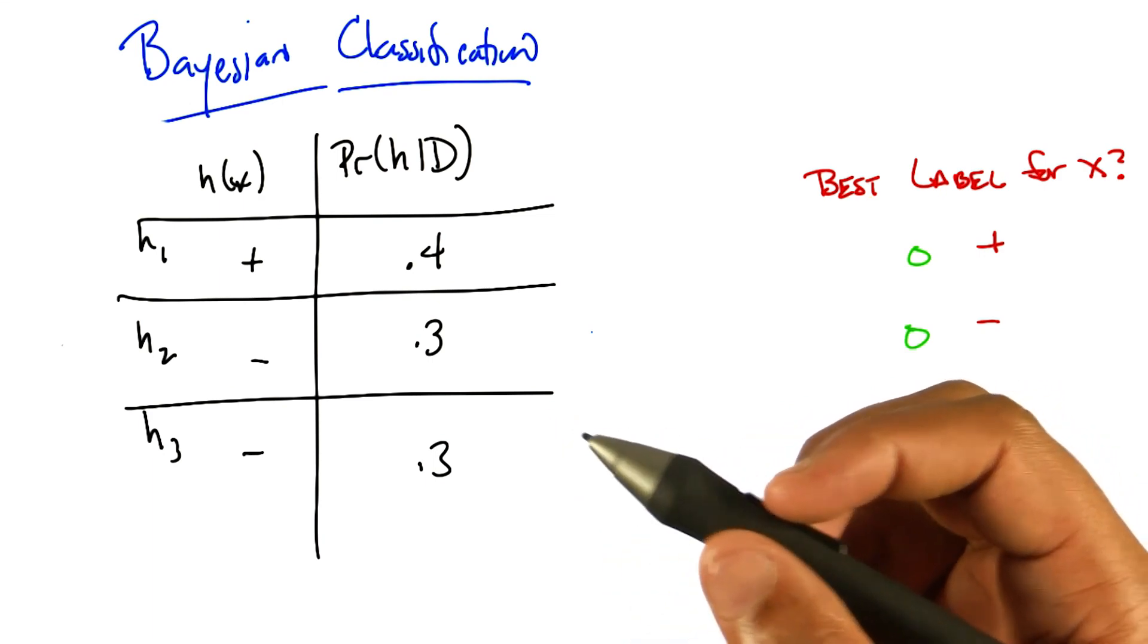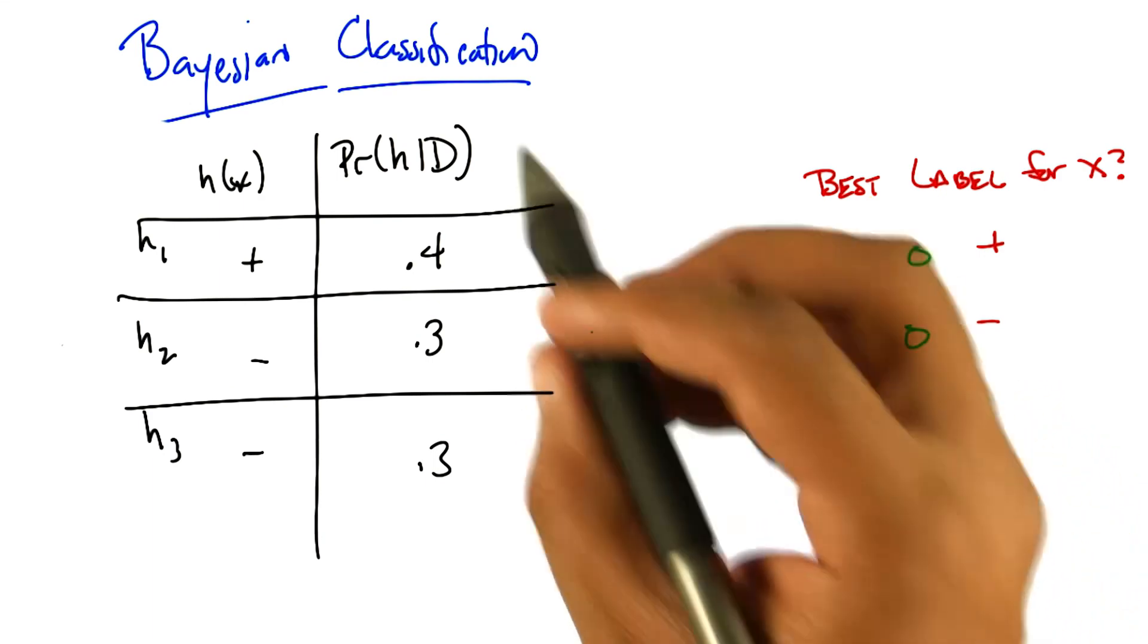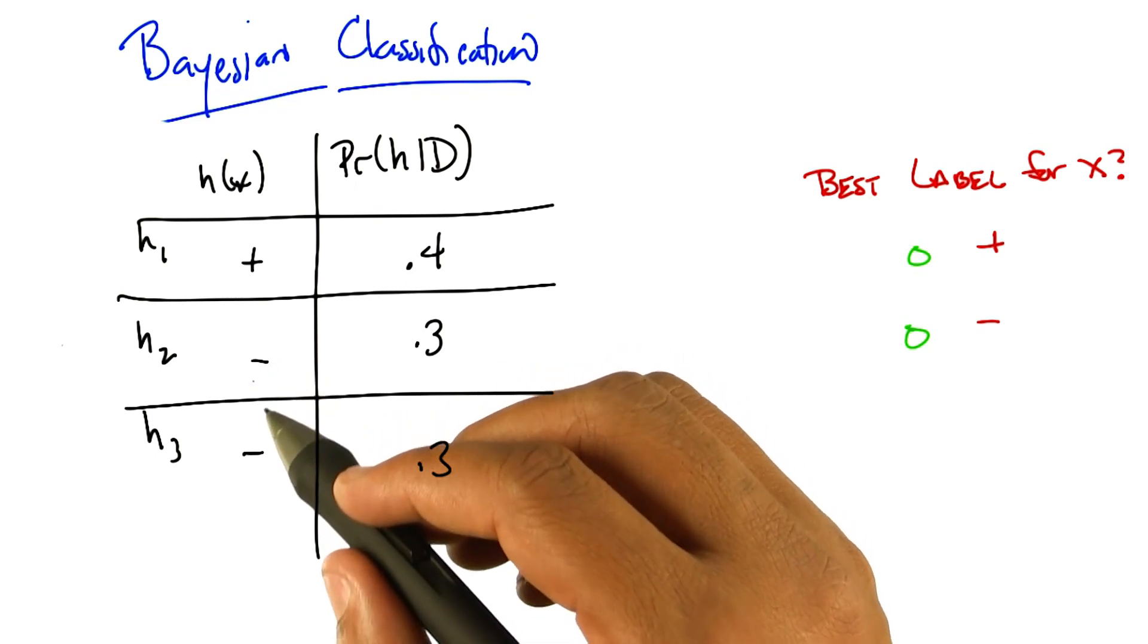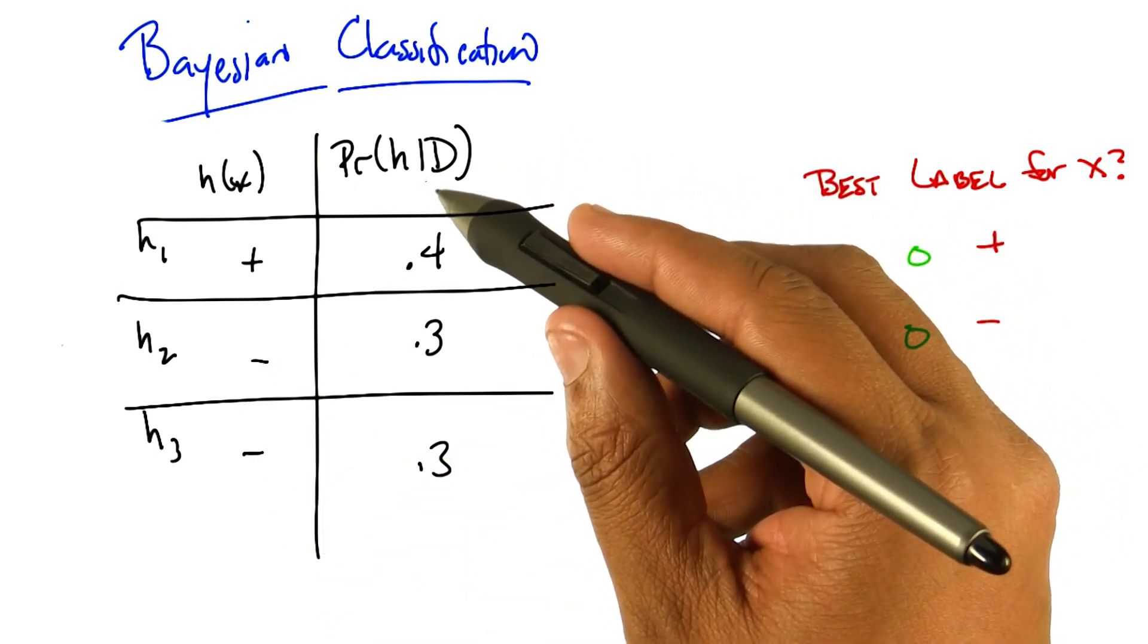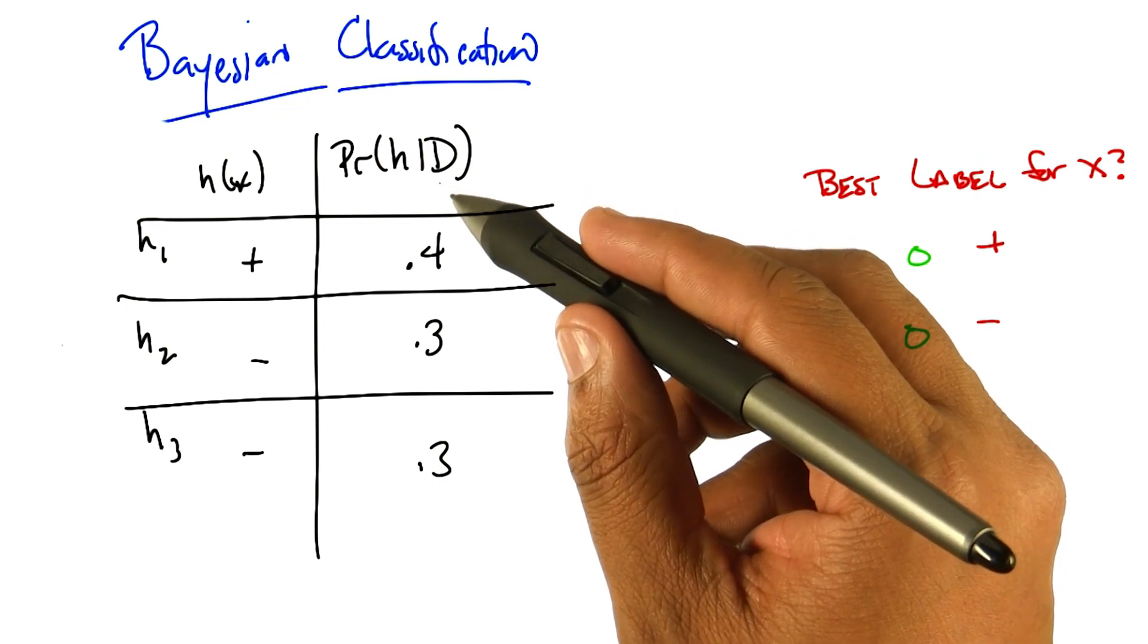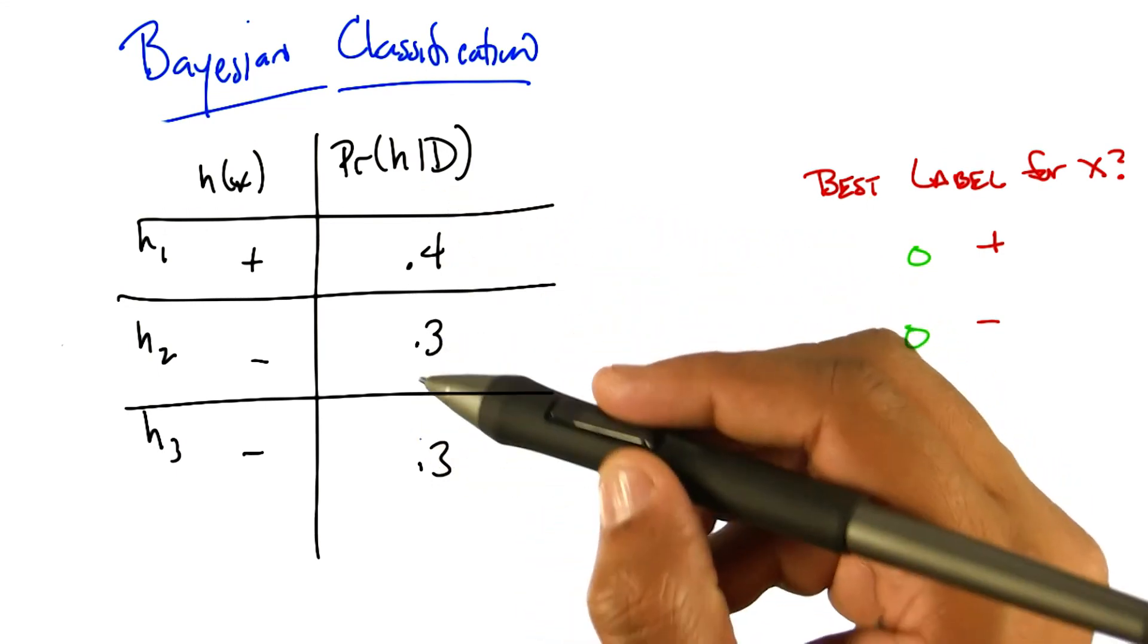Or can label it plus or minus. And h1 decides that for that x, it's positive, and the other two hypotheses decide that it is in fact negative. And h1 has a probability, that is the maximum a posteriori probability, is 0.4, for h2 it's 0.3, and for h3 it is 0.3.